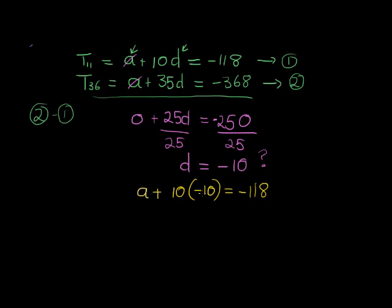Okay, and we say a plus 10 times negative 10 is equal to negative 118. 10 times negative 10 is negative 100. If I add a 100 on both sides to get rid of the negative 100 on the left-hand side, I find that a is equal to negative 18.